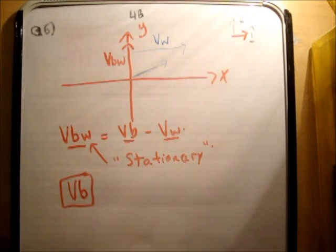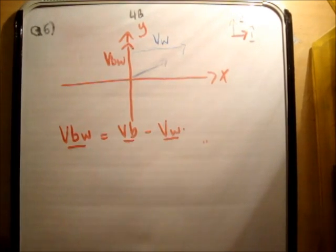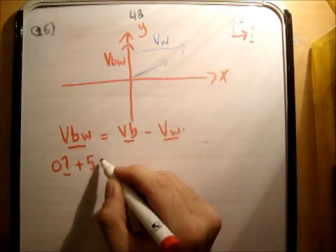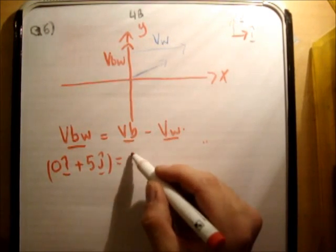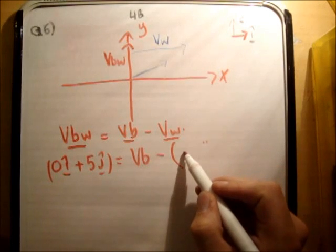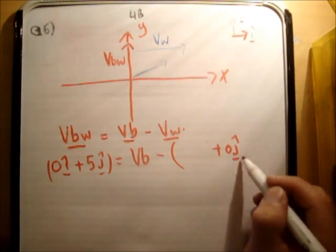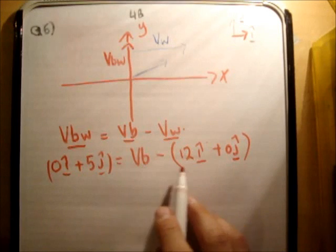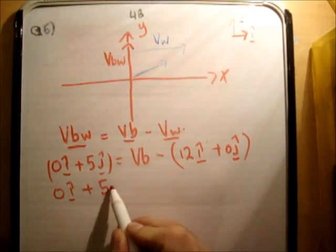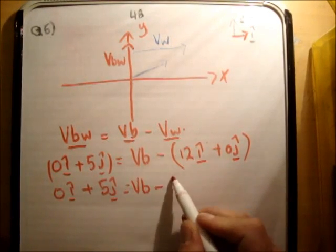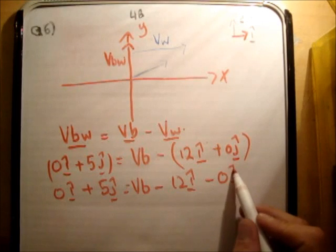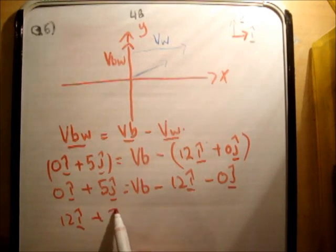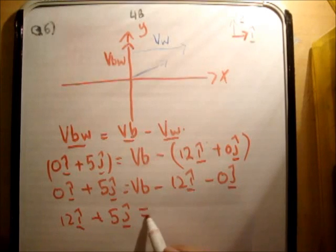So let's plug in the values which we know. We know vbw is equal to 0 i-hat plus 5 j-hat. And we don't know what vb is equal to. And we take away from that 0 j-hat and 12 i-hat, like so. And we can just do a small bit of algebra here. So 0 i-hat plus 5 j-hat is equal to vb minus 12 i-hat minus 0 j-hat. So we can bring these across, and we're going to get 12 i-hat plus 5 j-hat. 12 i-hat plus 5 j-hat is equal to vb.